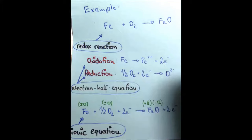The typical steps for constructing a half equation are: first, balance the atoms apart from oxygen and hydrogen; then balance the oxygen by adding water molecules; balance the hydrogens by adding hydrogen ions; and finally balance the charges by adding electrons.